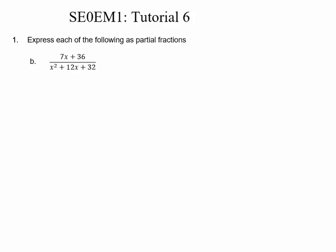The first thing we need to do is factorize the denominator. x times x gives us x squared. x times 8 gives us 8x. 4 times x gives us another 4x, which means we've now got 12x, and 4 times 8 is 32.